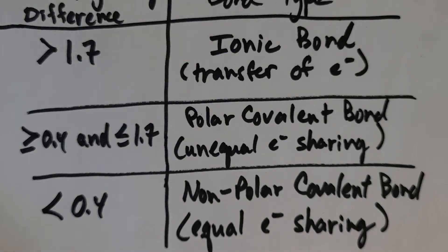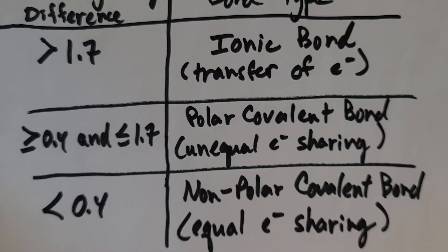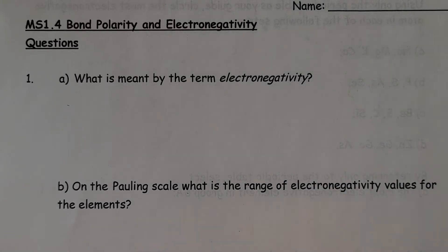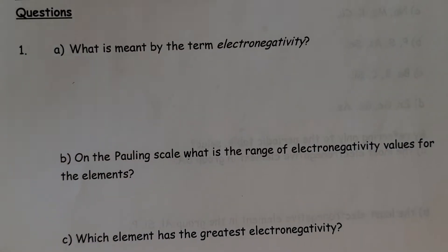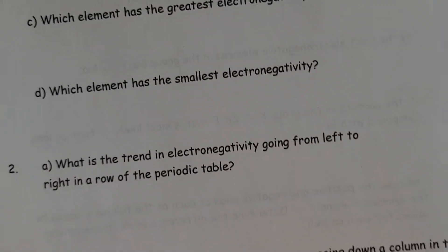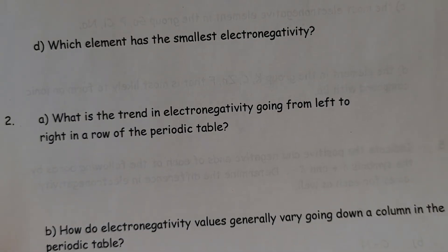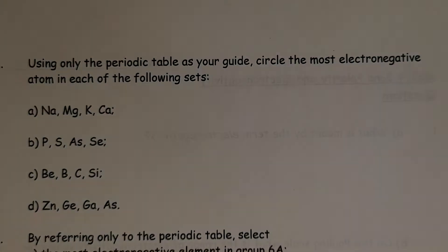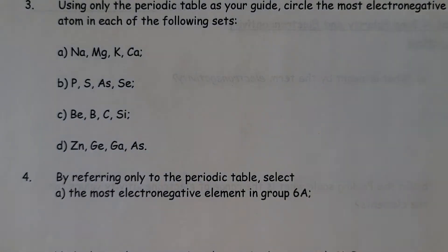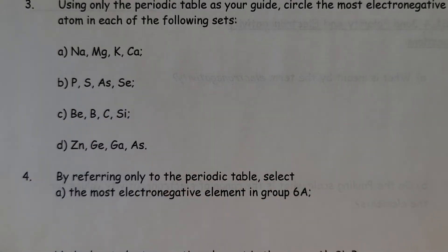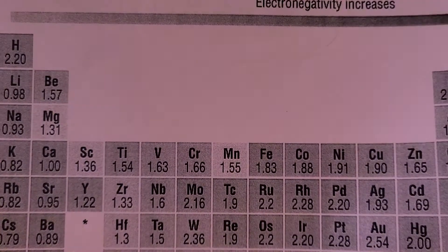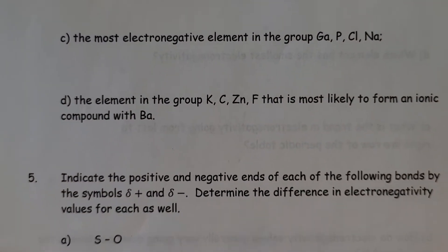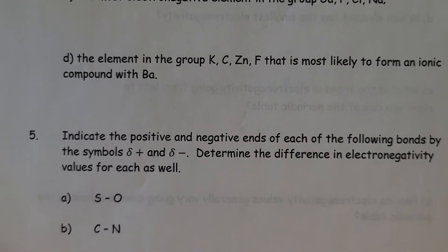We'll take a quick look at the assignment and go through a couple of questions to make sure you're on your way. The first page covers some trends we looked at, and the second page deals with identifying the most electronegative element. You can use the chart in your notes or this chart.